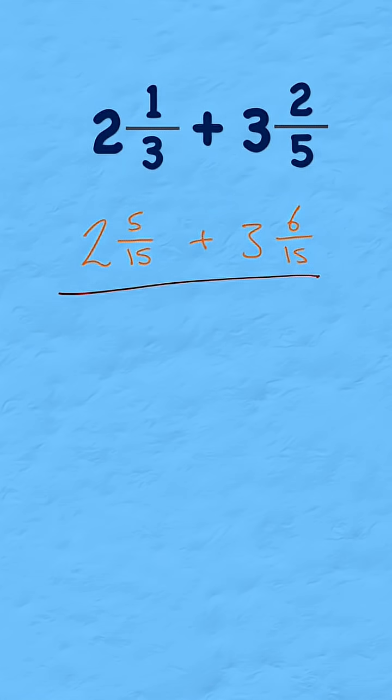So this is my new equivalent mixed fraction, and it's much easier to add up. I can start with my whole number, 2 plus 3, and 2 plus 3 is 5.